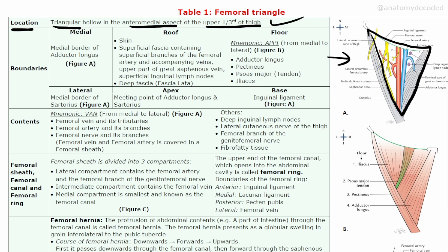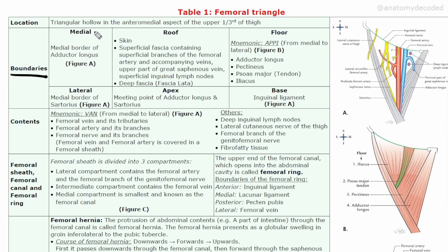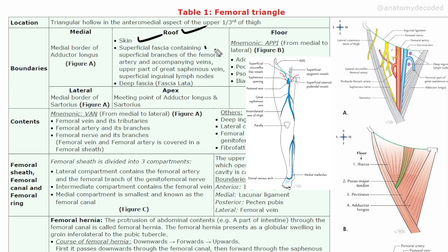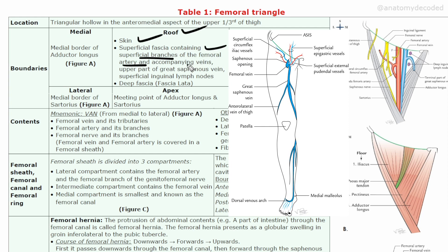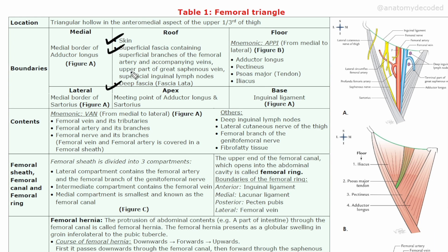The boundaries are divided into different headings. The medial boundary is formed by the medial border of adductor longus muscle. The lateral boundary is formed by the medial border of sartorius muscle. The roof is formed by skin, superficial fascia containing the superficial branches of the femoral artery and its accompanying veins, the great saphenous vein, and the superficial inguinal lymph nodes.